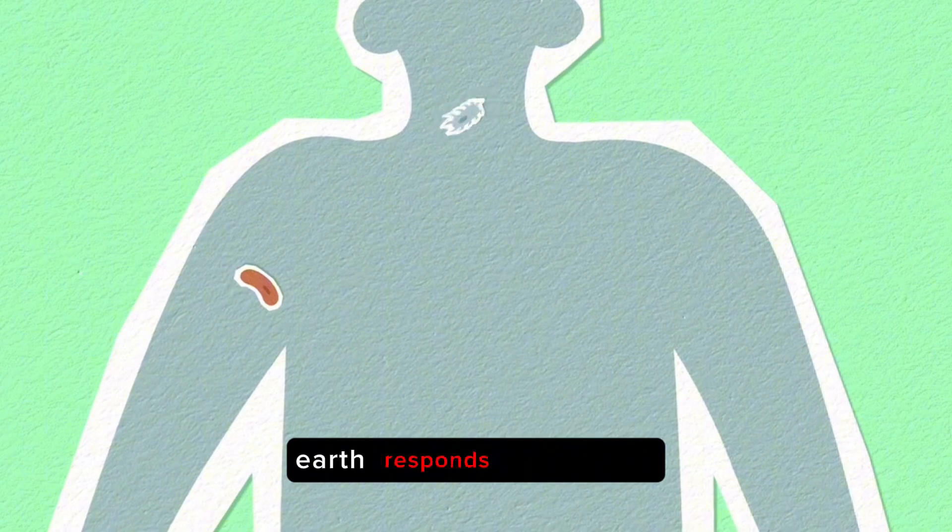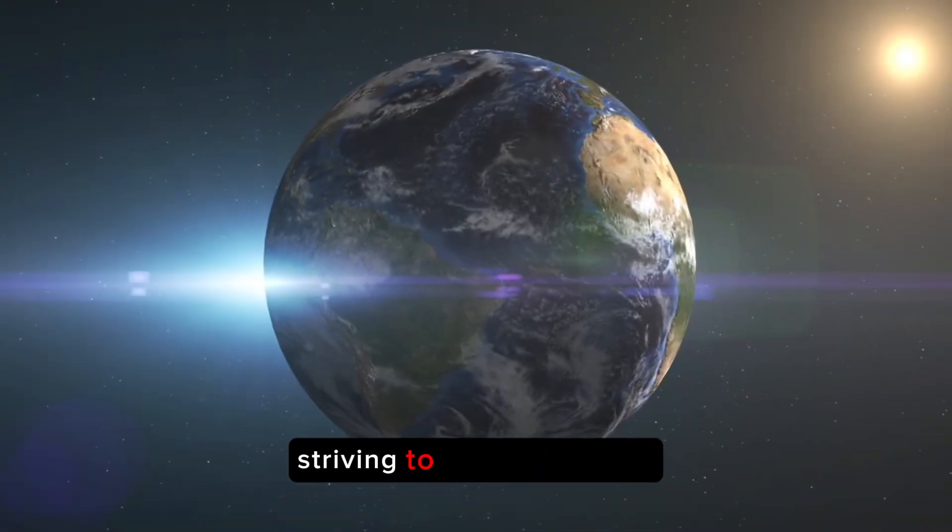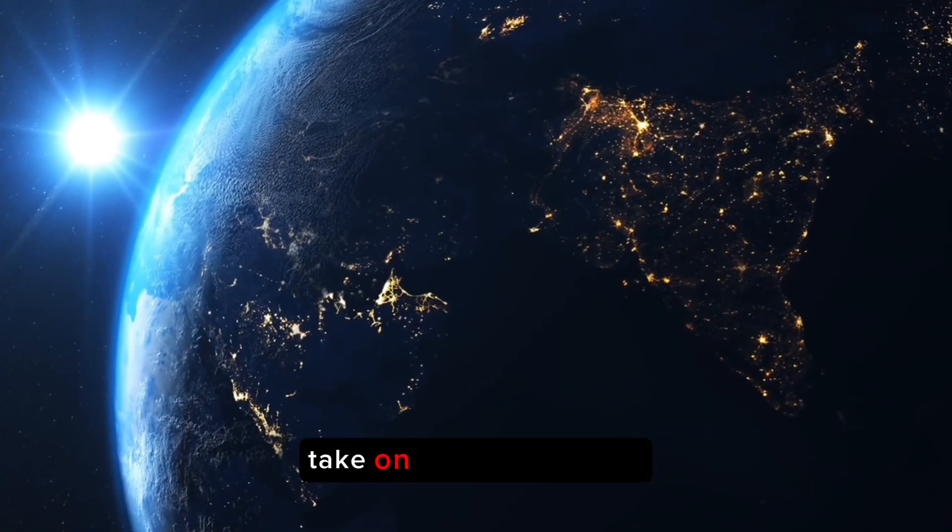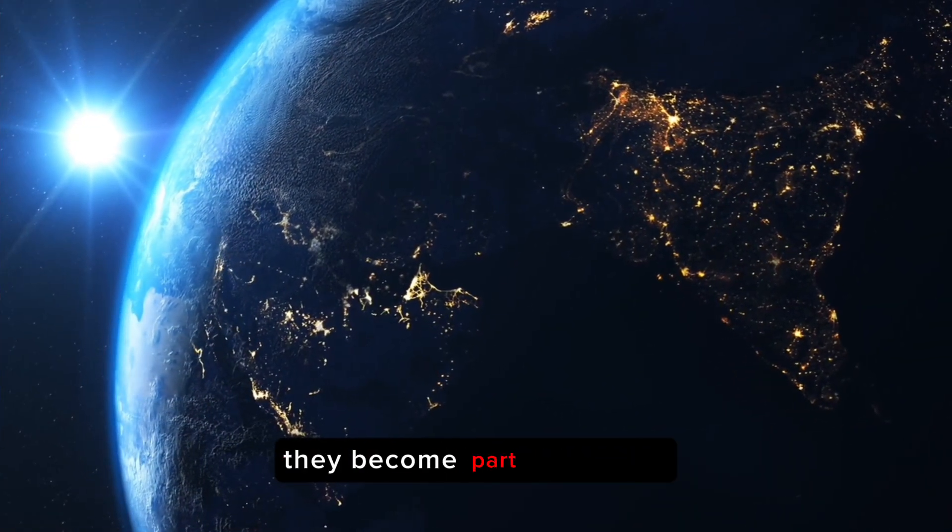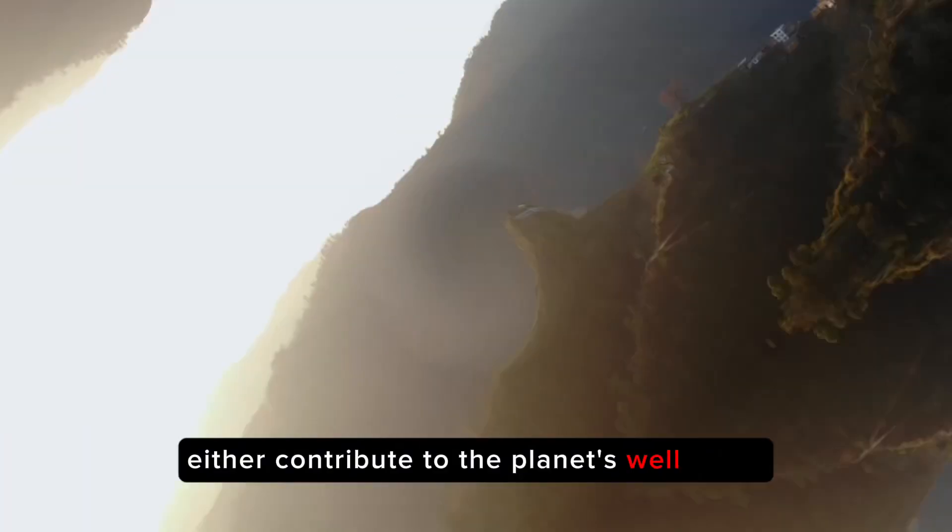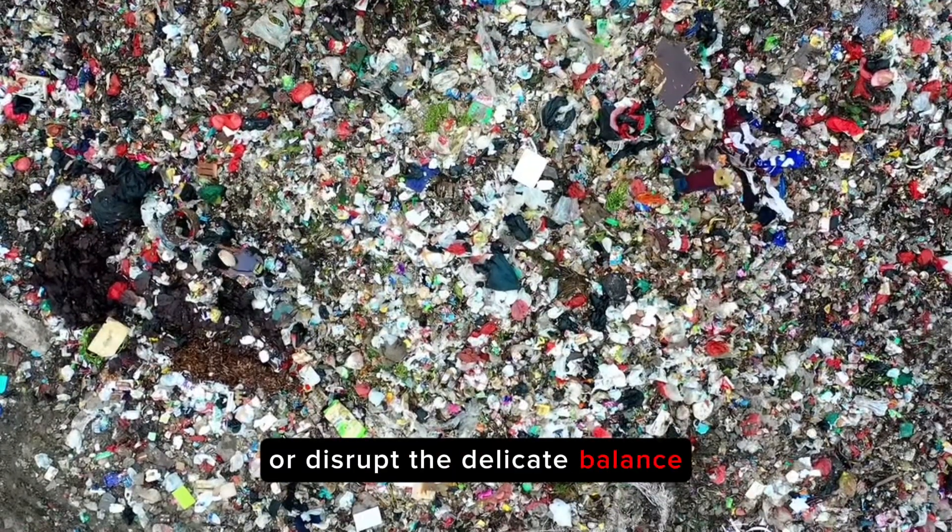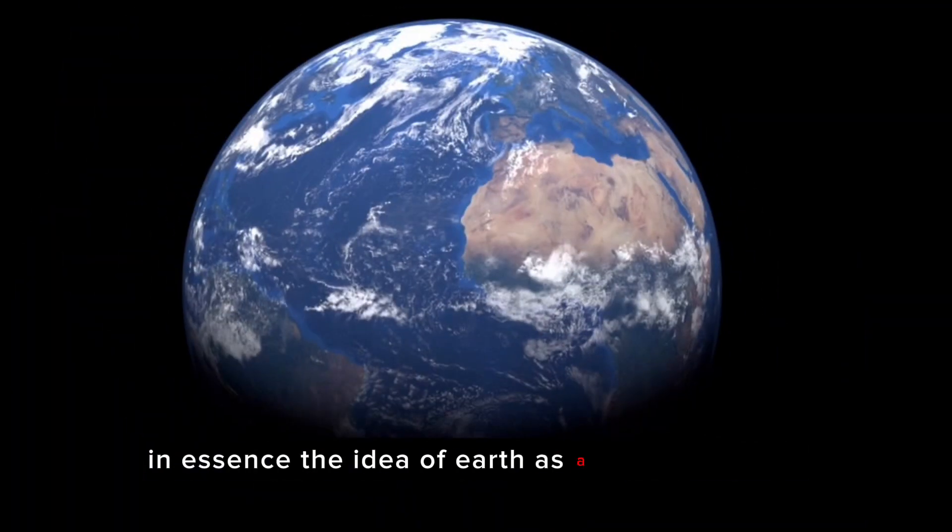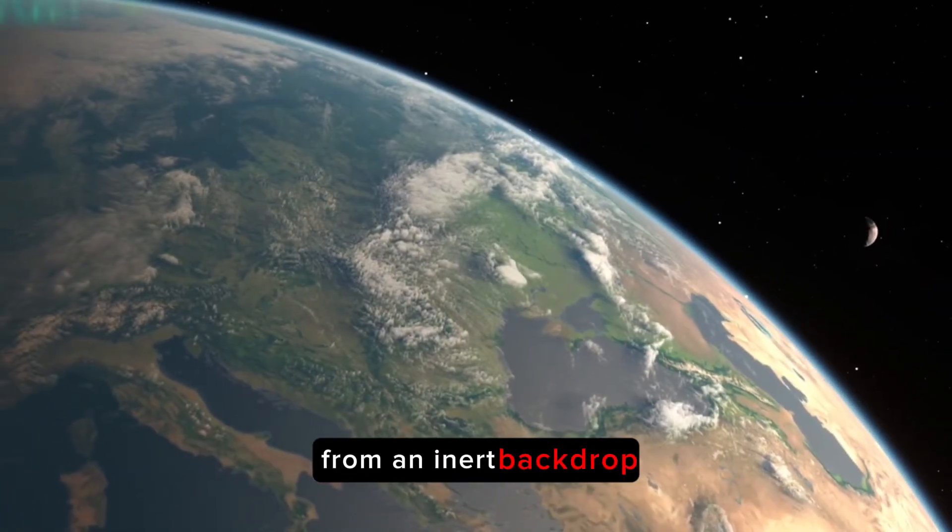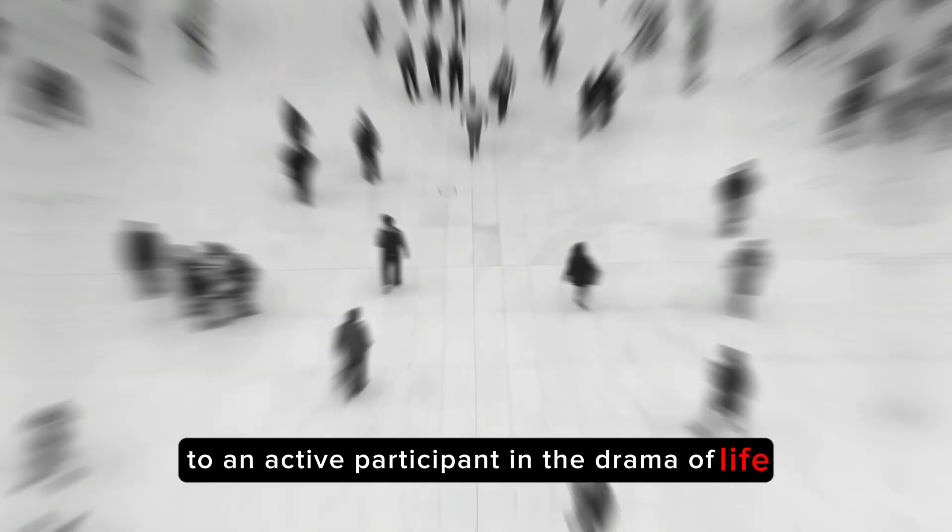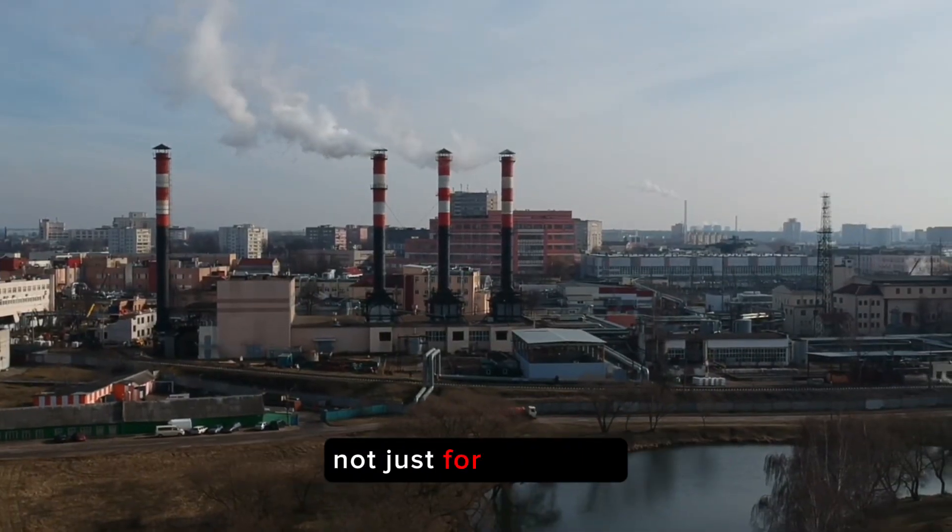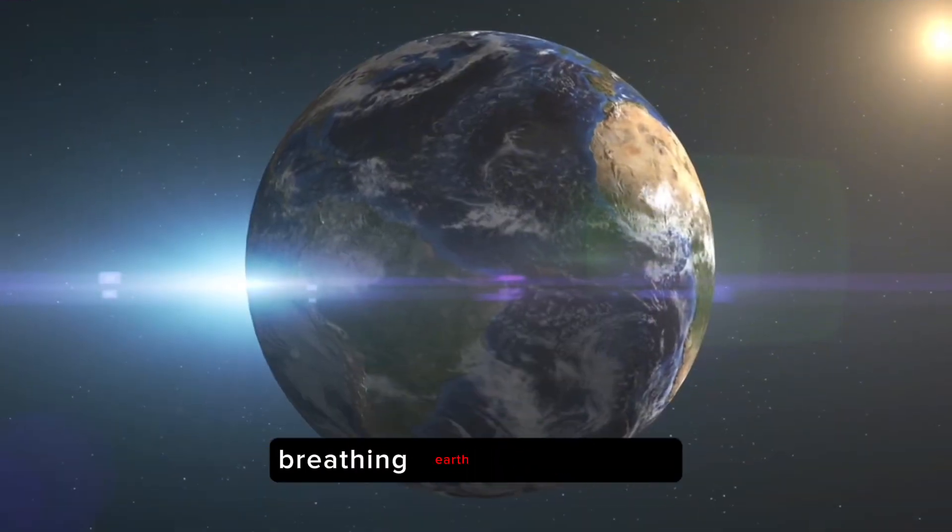While this perspective may seem metaphorical, it underscores the profound interconnectedness of Earth's systems. Like a living organism, Earth responds to changes, striving to find equilibrium. When viewed through this lens, human activities and their impact on the planet take on new significance. They become part of a larger, intricate web of interactions, where our actions can either contribute to the planet's well-being or disrupt the delicate balance. In essence, the idea of Earth as a living organism calls for a shift in our perception of the planet, from an inert backdrop to an active participant in the drama of life.